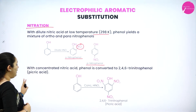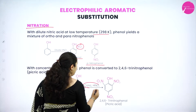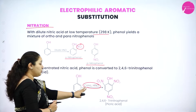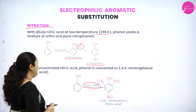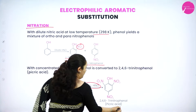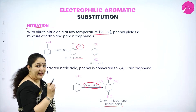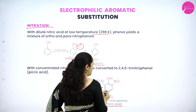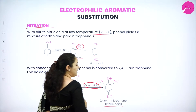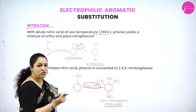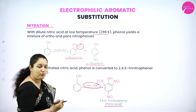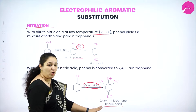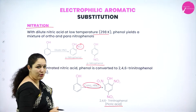Similarly, when phenol is treated with concentrated nitric acid, it will get converted to picric acid — that is, the NO2 group is substituted in the ortho position, one more ortho position, as well as in the para position. When the nitro group is substituted in all three positions it gives picric acid, which is the common name of this compound.